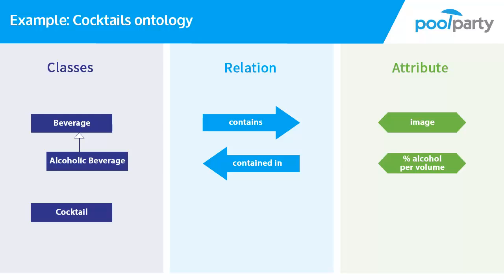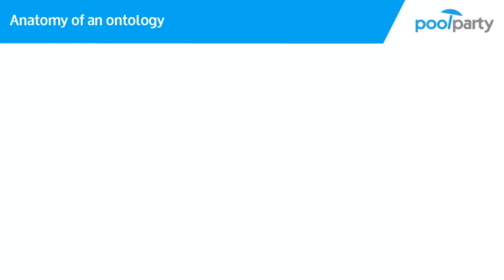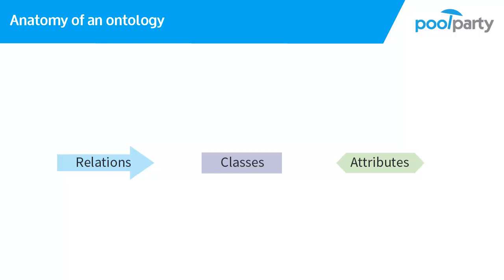We can also create relations between instances of the same class. For example, we could say that cocktails can be variants of other cocktails. Let's recap: in an ontology, you can define classes, attributes and relations of concepts. For every class you can define attributes, and between classes you can define relations.